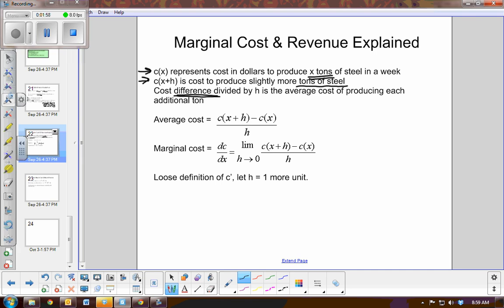That would be the change in y, the cost difference, divided by the number of units produced, which would be the change of x. This would give us the average cost of production. Now the derivative would tell us, at that moment of production, what is the cost to make one more ton of steel? So let H equal one more unit.